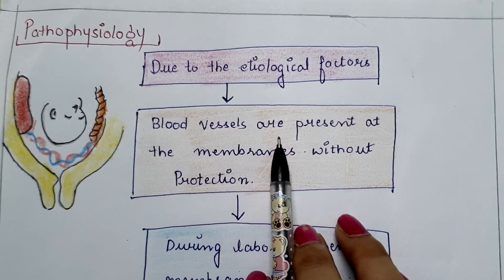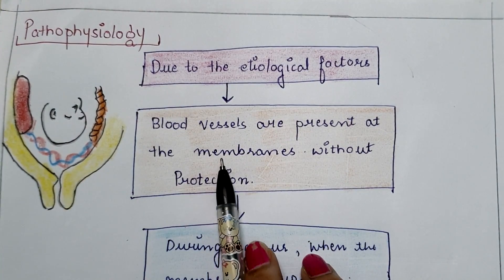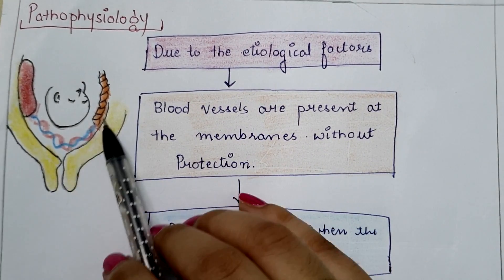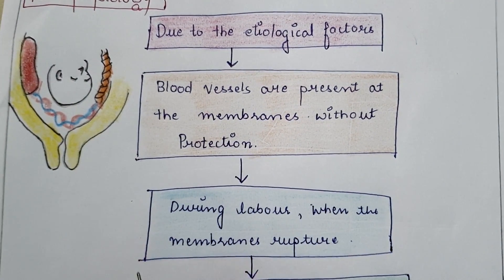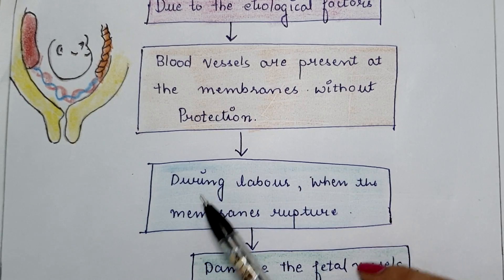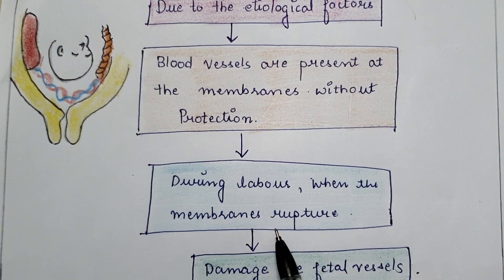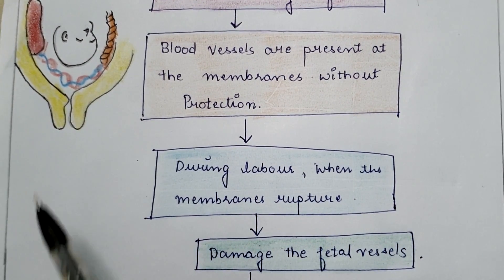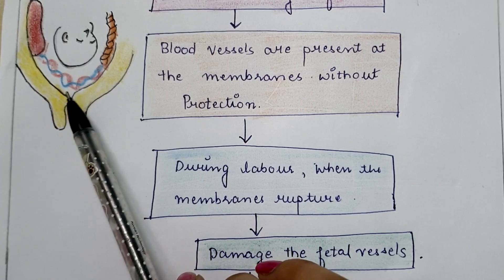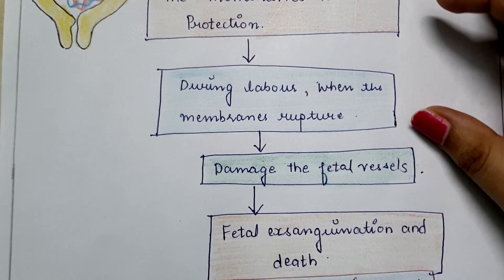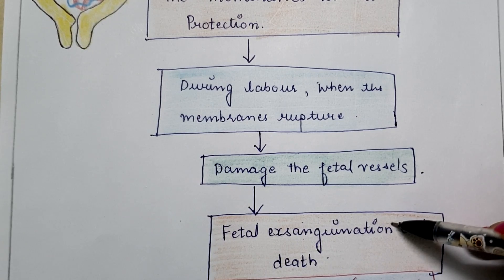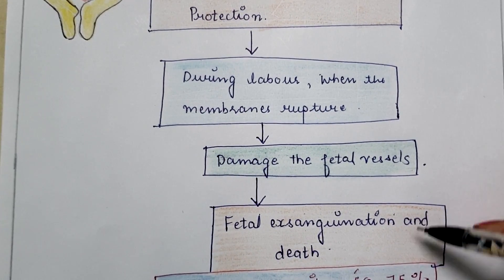Next is the pathophysiology. Due to the risk factors, fetal blood vessels are present in the membranes — amnion and chorion — without any protection, without Wharton's jelly, or without umbilical cord or placental tissue. During labor, when the membranes rupture — when the amnion and chorion rupture — the fetal blood vessels are also ruptured, causing damage and bleeding.